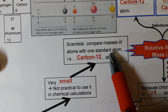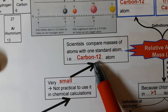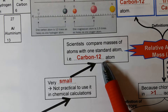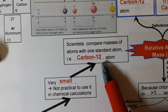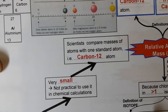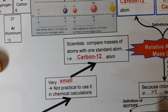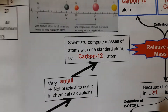The standard atom chosen in this case is the carbon-12 atom. We choose the carbon-12 atom because carbon is the most abundant element in the universe. So the mass of atoms of all other elements will be compared with the mass of a carbon-12 atom.